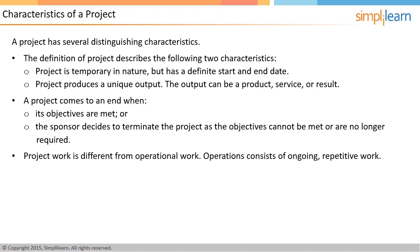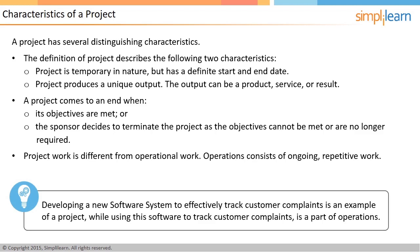It is important to differentiate project work from regular operational work. For example, your office receptionist does the same work every day of picking up incoming calls and directing them to the right person. This is an ongoing repetitive work and can be classified as an operation. Operations, unlike projects, are neither temporary nor unique. Creating a new software system to effectively track customer complaints can be an example of a project. When the software is successfully developed, the project objective is met, marking the end of the project. When you start using this software to track customer complaints, you are entering into the operations phase.